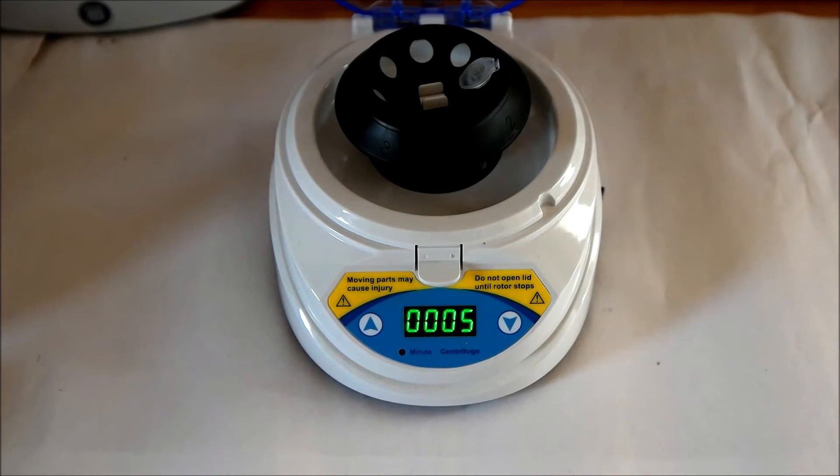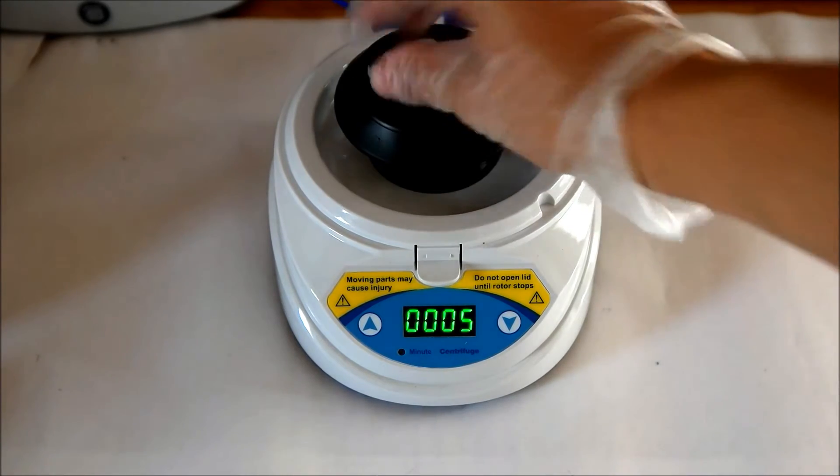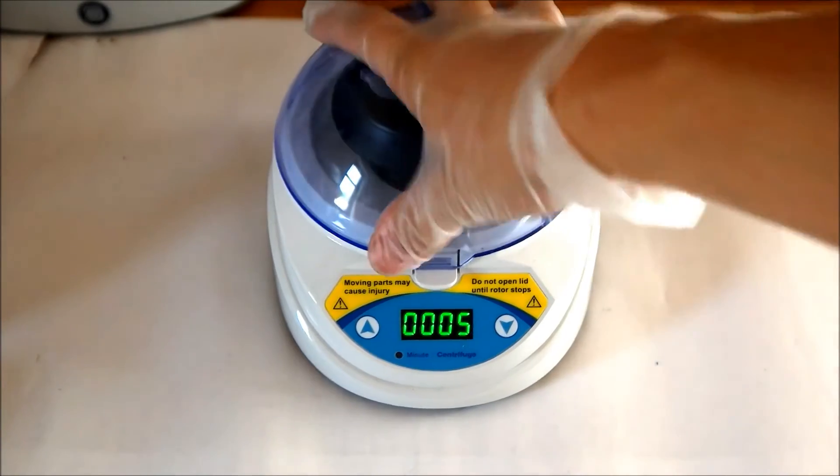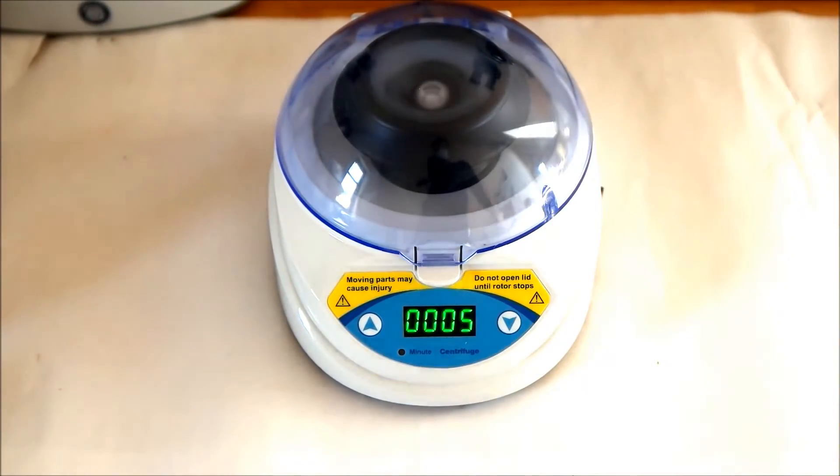Now this step is not absolutely necessary, but if you want, you can put your solution with the bacteria in a centrifuge, and centrifuge it for around 5 seconds at 6000 rpm.